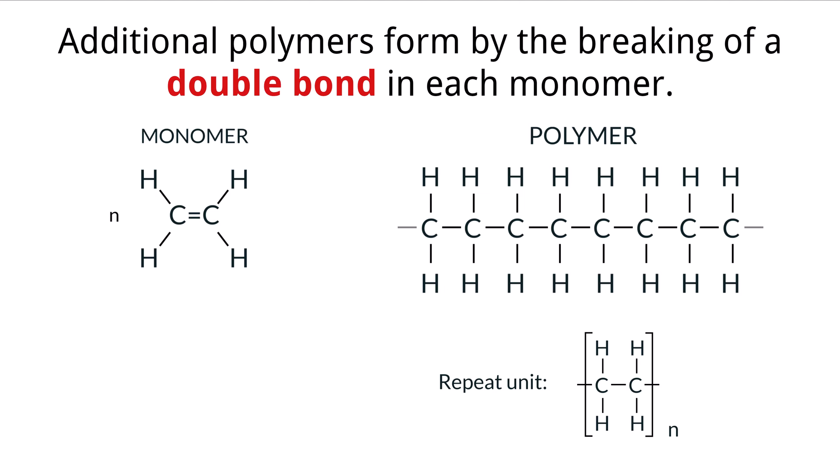Monomers can be chained together in multiple ways based on their structure. One way they can connect, if they possess double bonds, is through addition polymerization. This describes the process by which a monomer with a carbon-to-carbon double bond, like ethene, can polymerize to form polyethene.